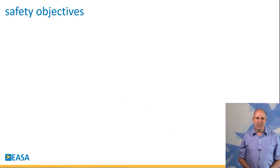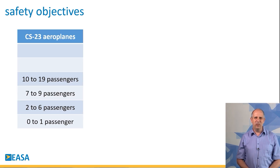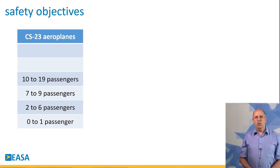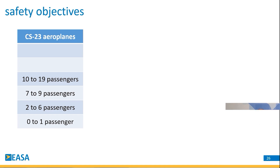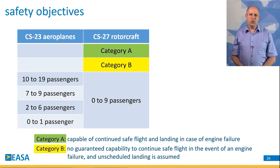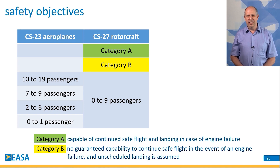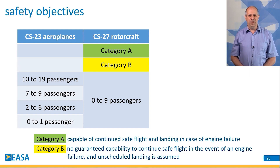We have proposed a second set of requirements that we hope to publish in a final version in 2022, this summer, as well as a third set towards the end of the year. One important aspect of the technical requirements are the safety objectives. For this, we looked at what exists for small airplanes or normal category airplanes, where you have different categories depending on the number of passengers on board. For small rotorcraft, the safety objectives do not depend on the number of passengers on board, which can be from 0 to 9. However, you have two categories: Category A, where in case of loss of the critical engine, the aircraft is capable of continued safe flight and landing.